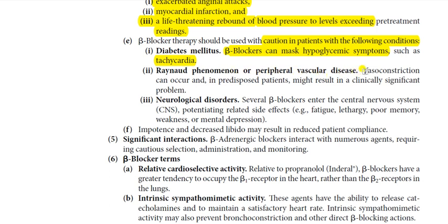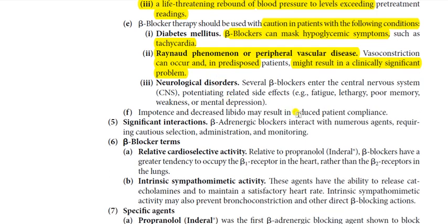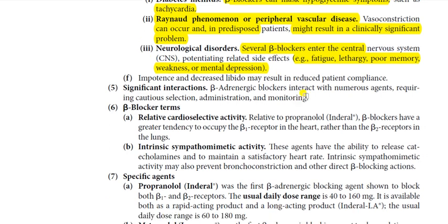Caution is also needed in Raynaud's phenomena and peripheral vascular disease, as vasoconstriction can occur in predisposed patients and result in clinically significant blood supply problems. Additionally, several beta blockers enter the central nervous system and can potentiate related side effects such as fatigue, lethargy, poor memory, weakness, and mental depression.